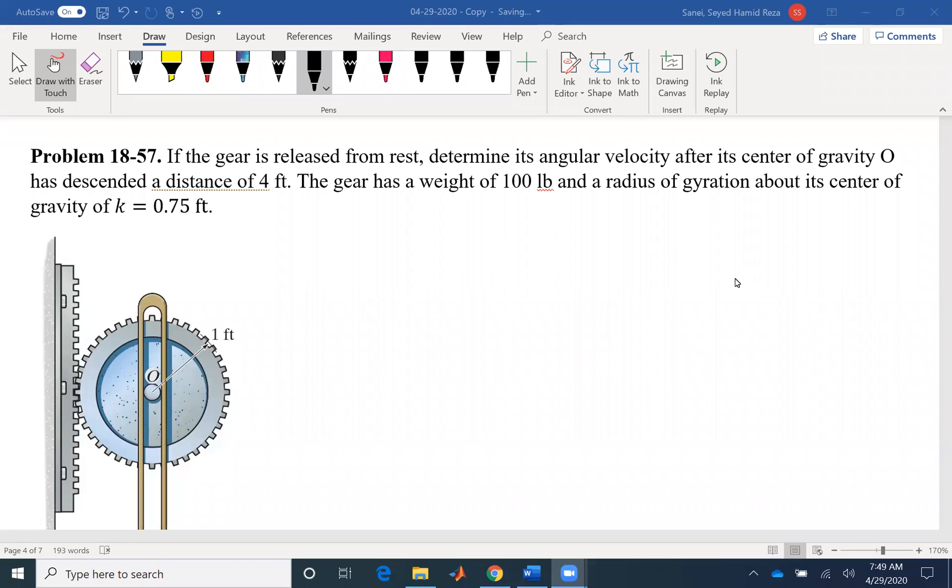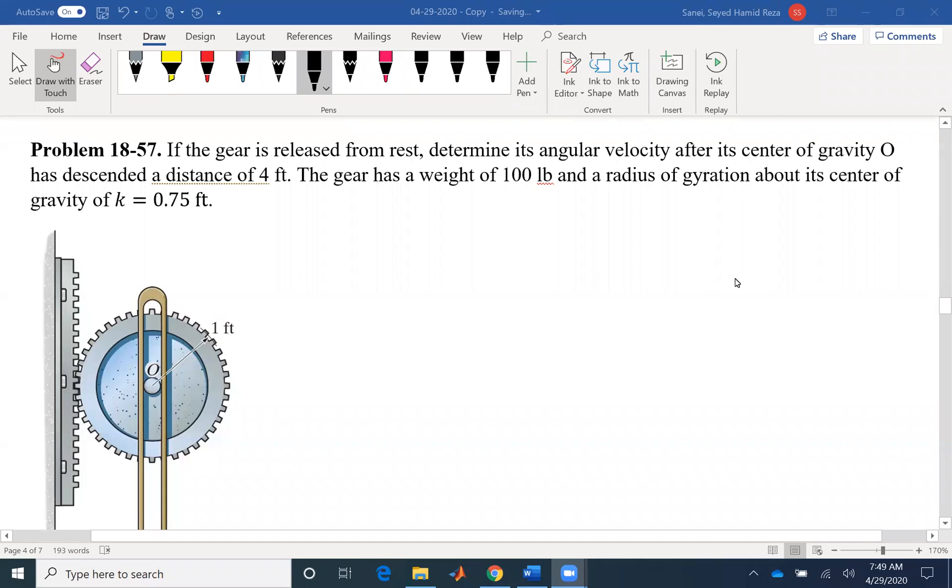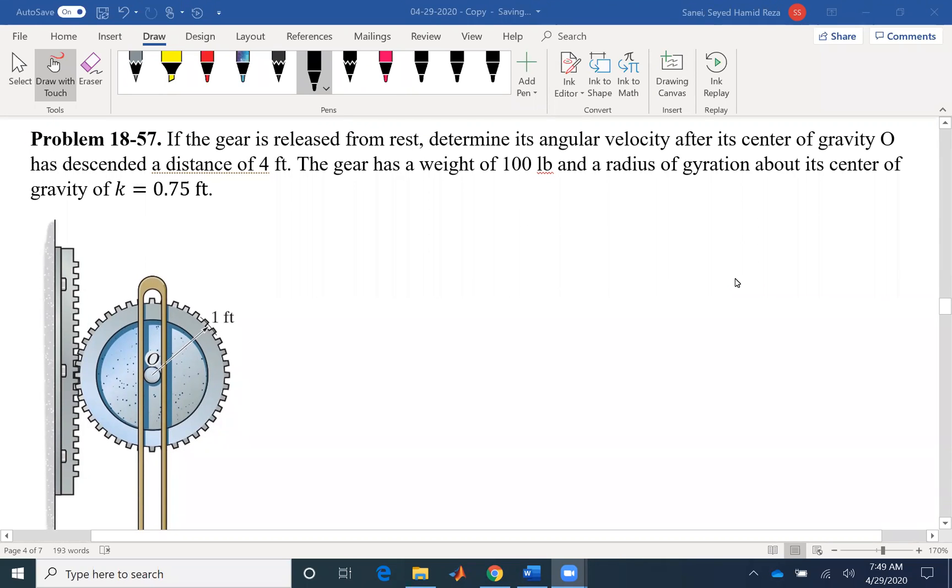Hello everyone. Today we are going to solve problem 57 of chapter 18. If the gear is released from rest, determine its angular velocity after its center of gravity has descended a distance of four feet. The gear has a weight of 100 pounds and a radius of gyration about its center of gravity of 0.75 feet.